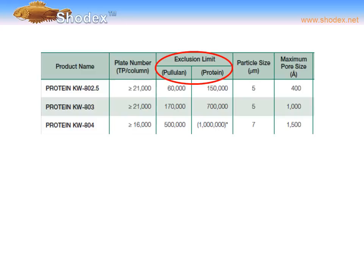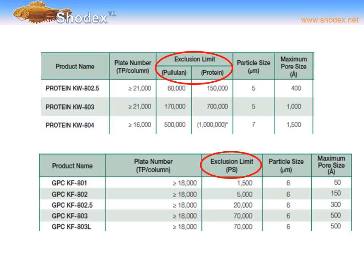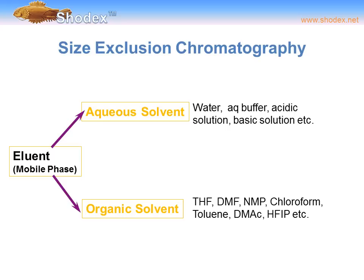The SHODEX catalog takes these differences into account. On this page of the catalog, we show the comparable exclusion limits of pullulan versus protein. Pullulan, a standard that we offer, is a long-chain linear sugar with poor folding properties, so its exclusion limit is lower than that of a typical protein. We also list the exclusion limits for polymers such as polystyrene.